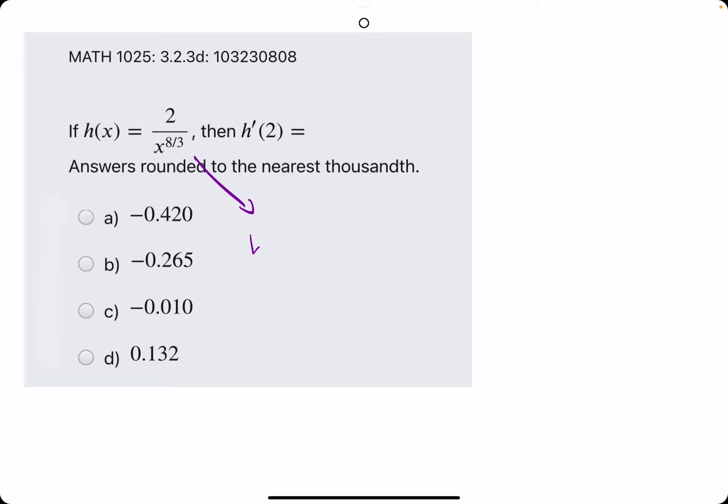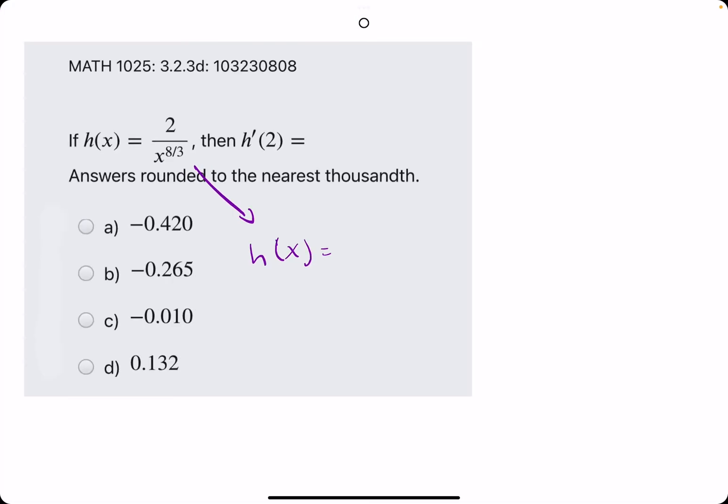In this one, we have an x term in the denominator. So before we find a derivative, let's rewrite it. We can keep the 2. But now the x term becomes x to the negative 8/3 since it was positive 8/3 in the denominator.